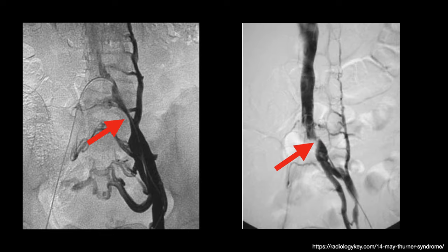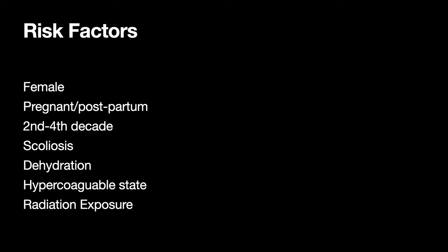Here's an example from Radiopaedia showing a CT scan with that compression, and in the venous-phase CT scan you can see compression from the right iliac artery. There are also angiographic examples showing that compression. The risk factors for May-Thurner syndrome include being female, pregnant or postpartum, in the second to fourth decade of life, and having conditions like dehydration or hypercoagulability. Recurrent left lower extremity DVTs should raise this on your differential.